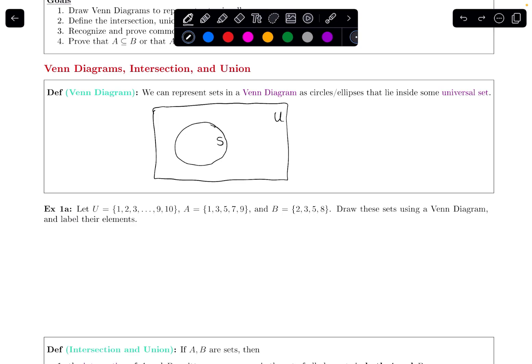So I have some universal set, so I'm going to draw a rectangle to denote that, a universal set. Within that universal set, I have this set A, which I'll denote with this circle.